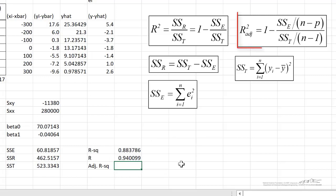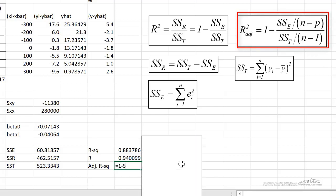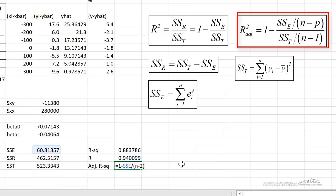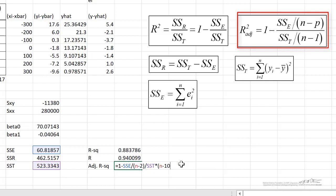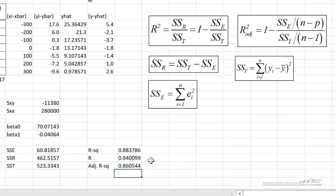And finally, our adjusted R squared, which is given by this formula. And that's 1 minus SSE divided by N minus 2. P for a simple linear model is 2. We have two parameters in our model. We divide that by SST. And if we divide by N minus 1, we multiply by N minus 1. And so our adjusted R squared is 0.8605.